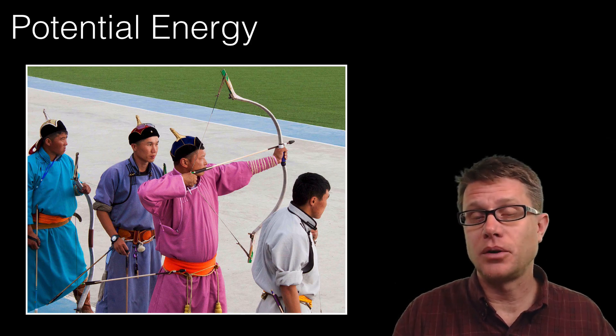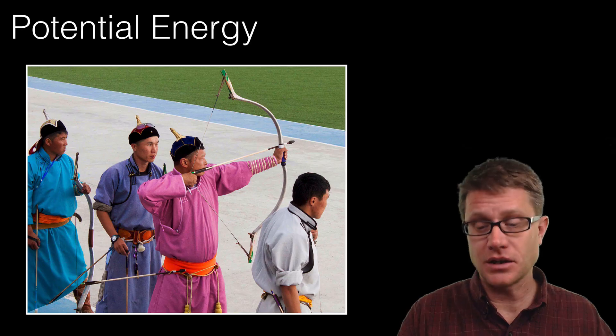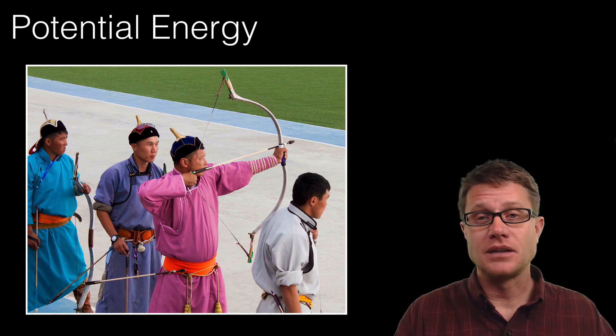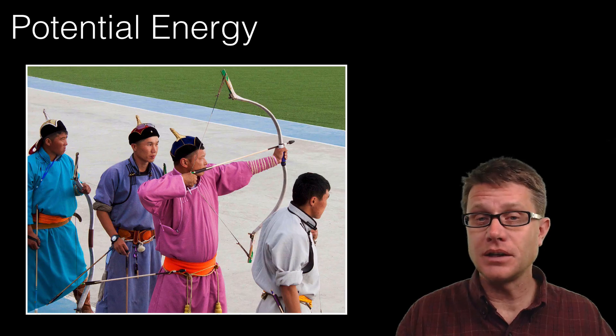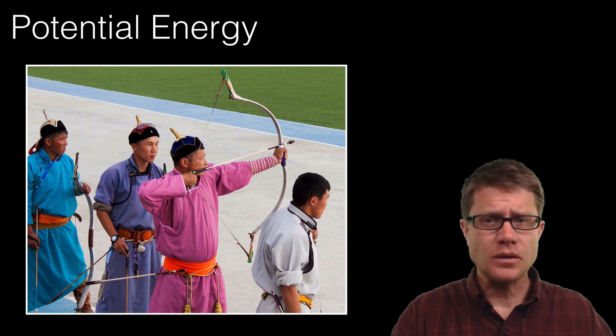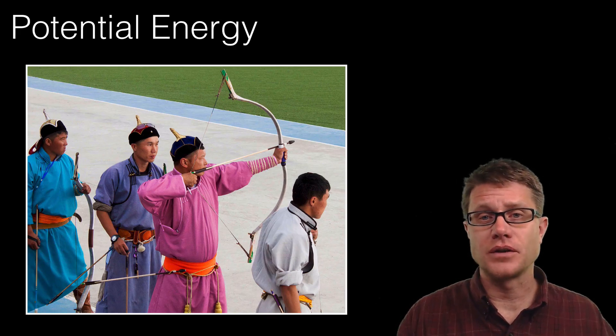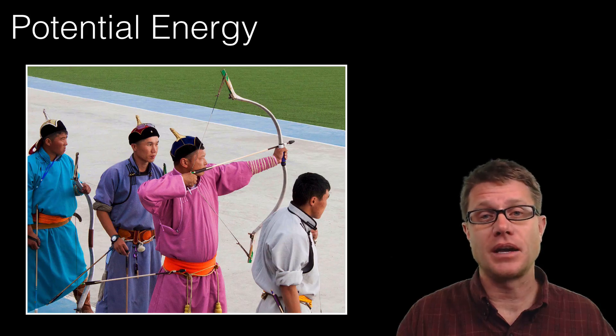As this archer pulls back on the arrow, this is a system. What are some of the objects? We have got the string, the bow, and his hand. What we are doing as we are pulling on that bow is applying a conservative force, and when we let it go we are going to get some of that energy back.